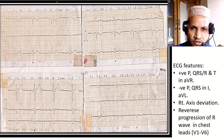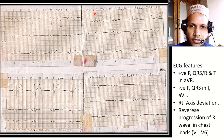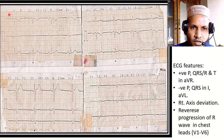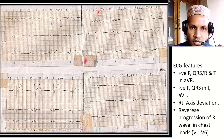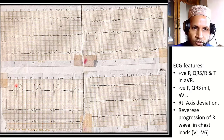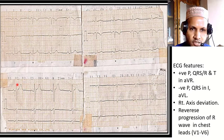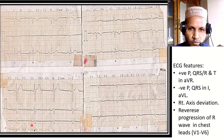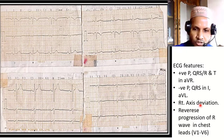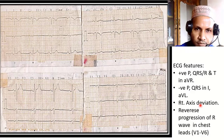Here is another ECG. We can see positive P and R waves in AVR and negative P and R waves in lead I and AVL, along with reverse R wave progression from V1 to V6 — the R wave height is gradually decreasing from V1 to V6. This is also true dextrocardia.